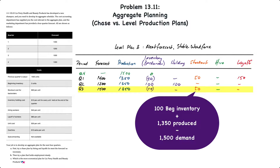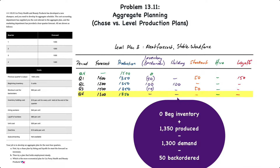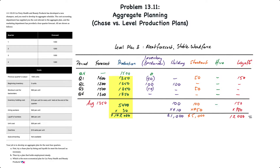Quarter three: forecast is 1500 units, production is 1350. With 100 units remaining from quarter two plus 1350 produced, we have 1450 units available but the forecast is 1500, so we are 50 units short — resulting in a stock-out. Quarter four: production is 1350 units, forecast is 1300 units. The 50 unit excess goes to fill the back order of 50 units from the previous quarter, resulting in no inventory stock-out costs and no additional hiring or layoff costs.